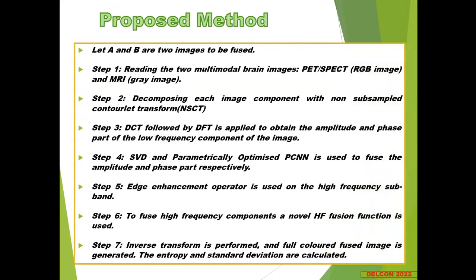This slide presents the methodology of our fusion rule. Firstly, we consider two images: MRI as a grayscale image and PET or SPECT as an RGB image. Both the source images are decomposed using NSCT rule into low frequency and high frequency components. The low frequency component undergoes decomposition into amplitude and phase spectrum by applying DCT followed by discrete Fourier transform. In step 4, we applied SVD to fuse the amplitude, and the phase part undergoes parametrically optimized PCNN rule for fusion.